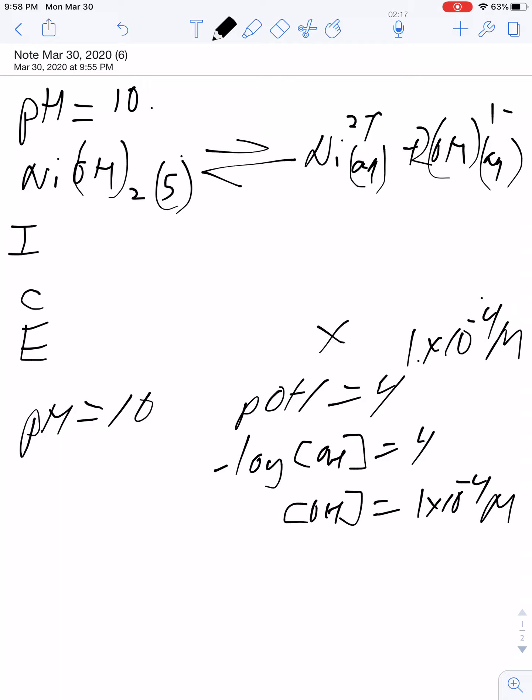I only really have one unknown here, and that is the amount of nickel. We're not doing any shifting because they're telling us the pH, they're telling us the equilibrium concentration. So KSP is products over reactants.